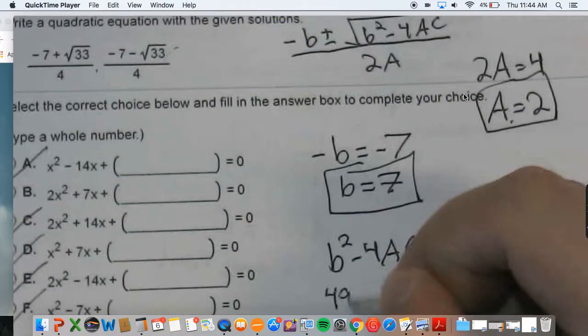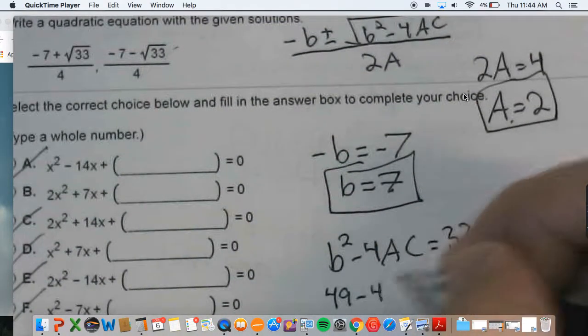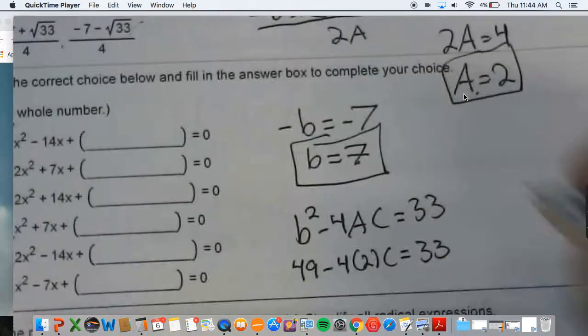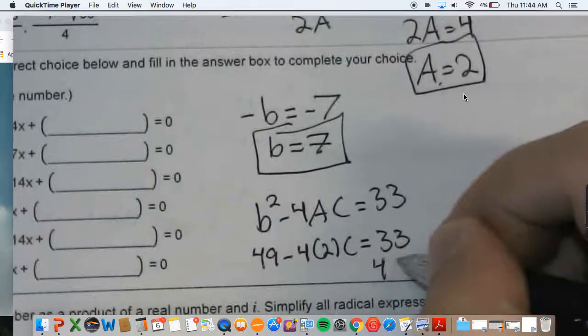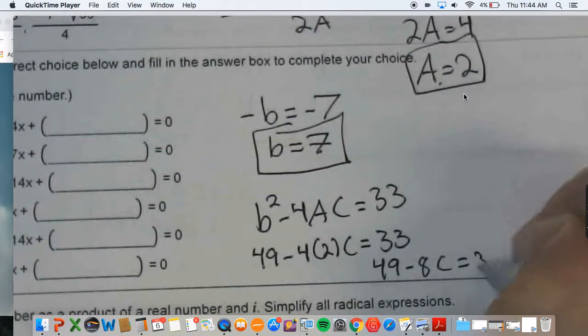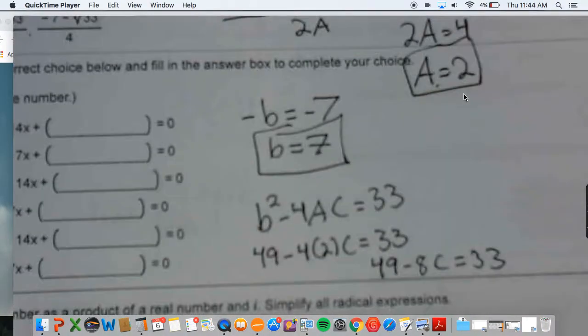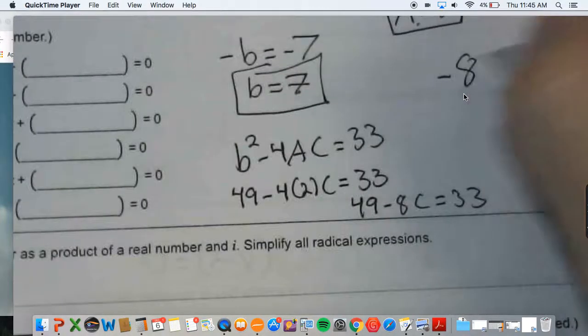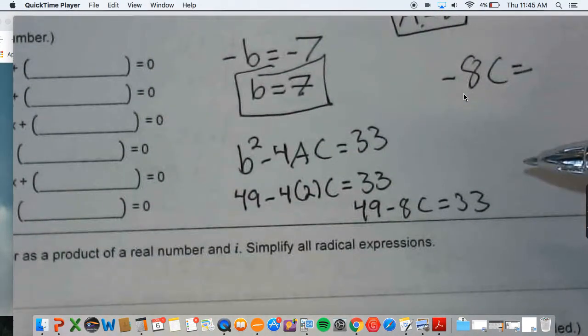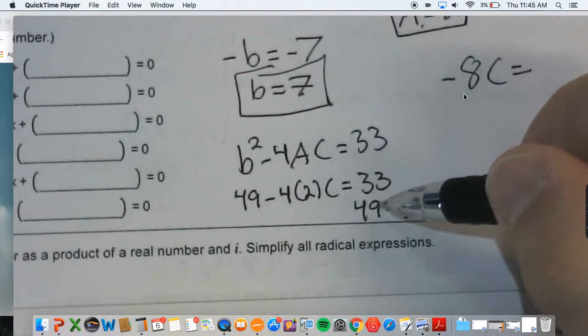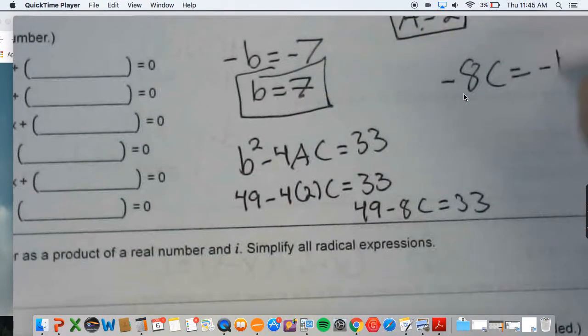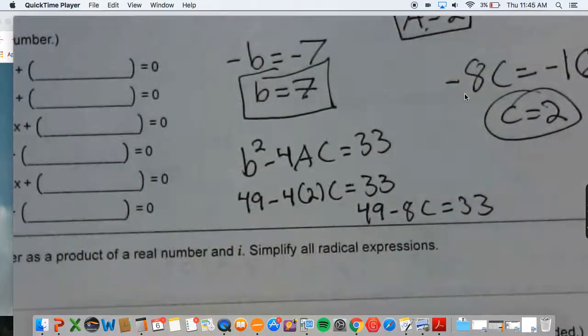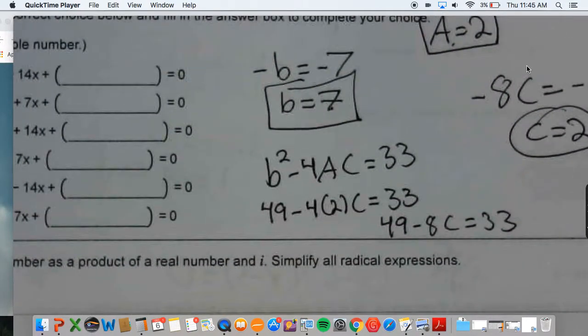If you plug in 49, which is 7 squared minus 4 times 2 times c. This is then rewritten to 49 minus 8c equals 33. Two-step equations from algebra 1. So negative 8c is going to be equal to 33 minus 49, so negative 16. Eventually c equals positive 2. So when we go back to the final answer, we can put in that c is 2.